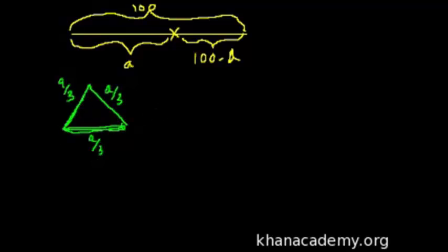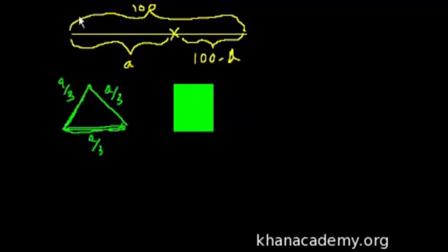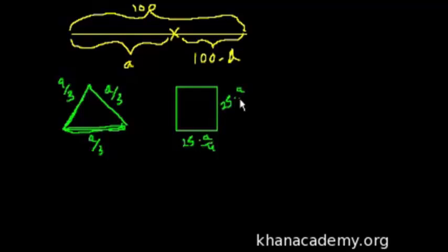And then I also have a square with the leftovers. So there's my square. If the whole perimeter is 100 minus a, what is the length of each side? It's going to be this divided by 4, because all sides are equal. So 100 minus a divided by 4 is 25 minus a over 4. So each side of the square is 25 minus a/4.